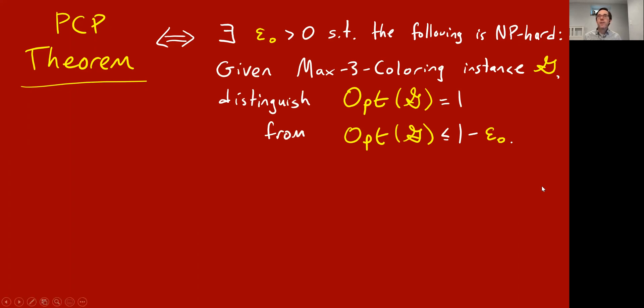You're given as input a three-coloring problem, but think of it like a CSP, like a maximization problem. I called it max three-coloring problem G. It's NP-hard to distinguish between two cases. First case is where the opt is 1, which in our CSP notation means there is a perfect assignment, i.e. the graph is three-colorable. You can three-color the vertices such that all edges are bichromatic. Versus the case where the opt is at most 1 minus epsilon naught. Think of that as like 0.99 or 99%, meaning that not only is the graph not three-colorable, but any three-coloring of the vertices will make at least 1% of the edges monochromatic.